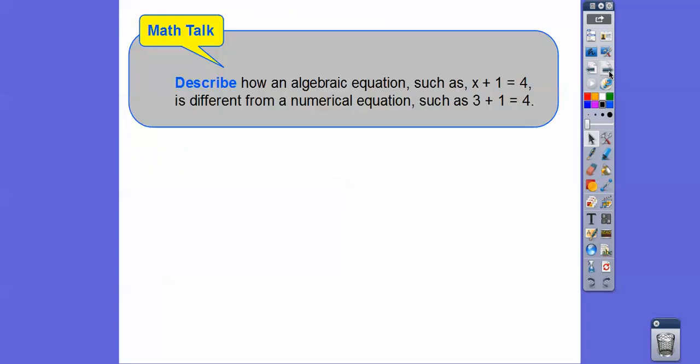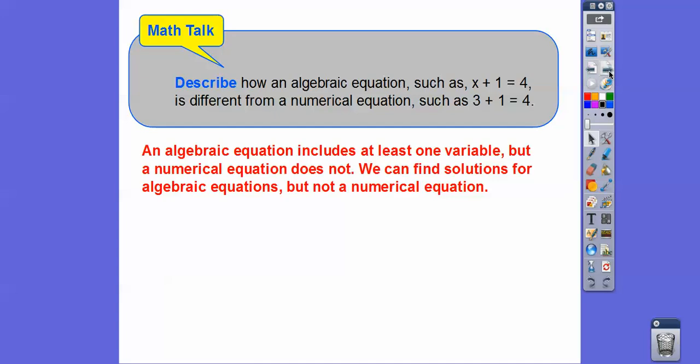Describe how an algebraic equation such as x plus 1 equals 4 is different from a numerical equation such as 3 plus 1 equals 4. Well, we kind of talked about that. An algebraic equation includes at least one variable.